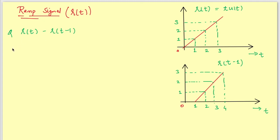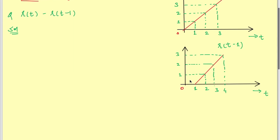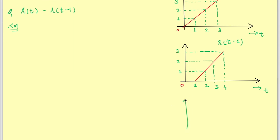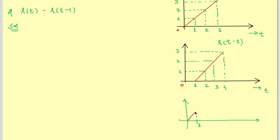First we solve r(t) minus r(t-1). At t=1, r(t)=1 and r(t-1)=0, so the difference is 1. The signal rises from 0. At t=2, r(t)=2 and r(t-1)=1, so 2 minus 1 equals 1.